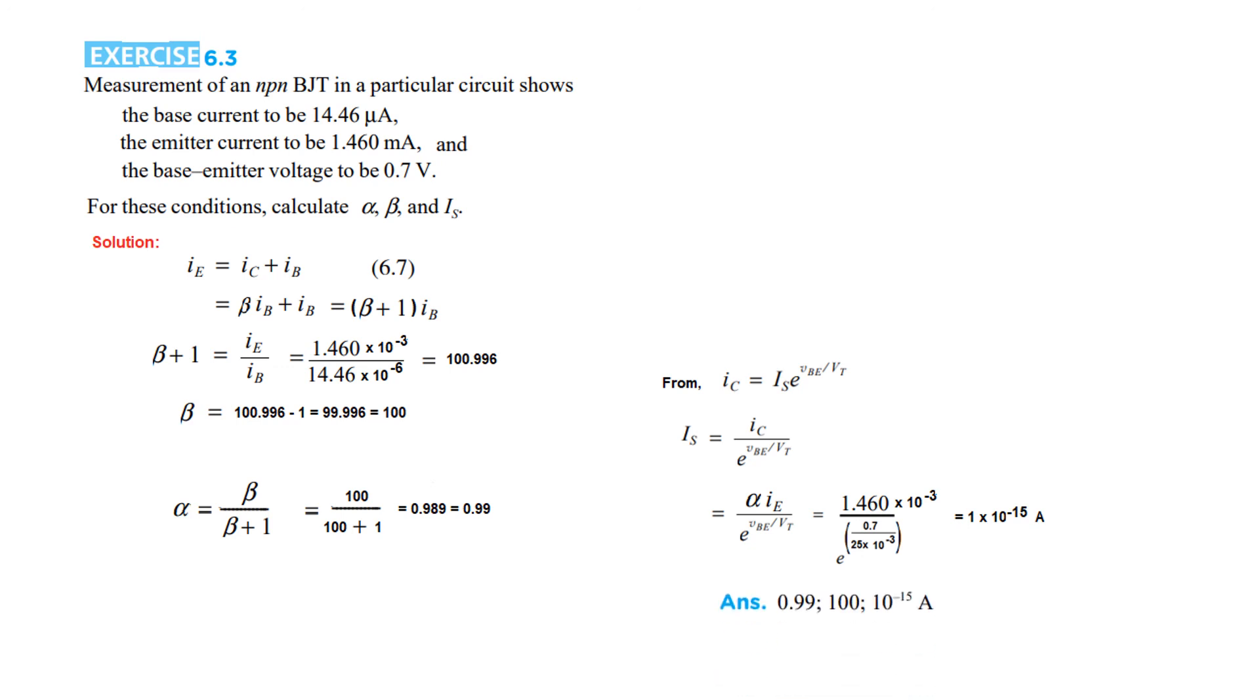The answer given in the book is alpha = 0.99, beta = 100, and IS = 10^-15 ampere. I hope this gives you an understanding of how you can very easily solve these problems if you follow all the steps. Thank you.